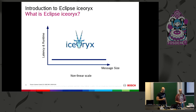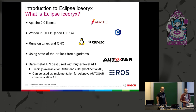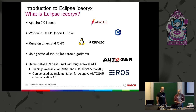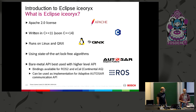Digging into the details: Iceoryx comes under an Apache 2 license, it's written in C++11 — though we're planning to move to C++14 soon. It runs on both Linux and QNX. To establish communication over shared memory we use state-of-the-art lock-free algorithms. We'd advise anyone to use a higher-level API rather than the raw API directly. We offer Rust bindings, Continental integrated Iceoryx into their ECAL middleware to make it faster, and it can also be used as an implementation for the adaptive AUTOSAR communications API, which is widely used in the automotive industry.